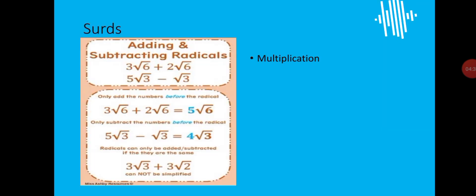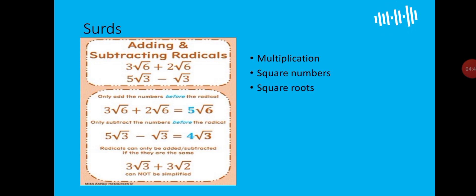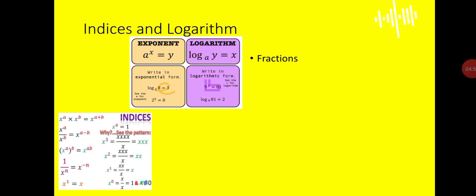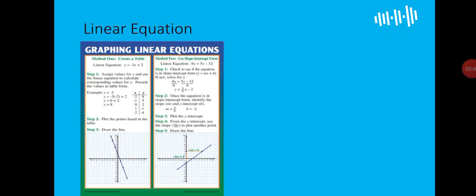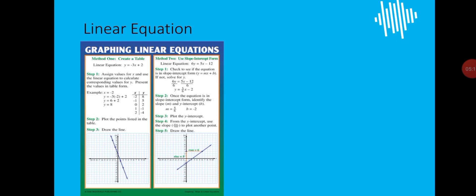For sets, you should be very good with your multiplication, square numbers, and square roots. One common issue students have is differentiating between a square number and a square root. For indices and logarithm — logarithm is actually in the senior high school — you should be well abreast with fractions and exponents. If you reach a topic where you have an issue, get your pen and paper ready, and if there are sub-topics you don't know, go to your tutor or a friend to help.